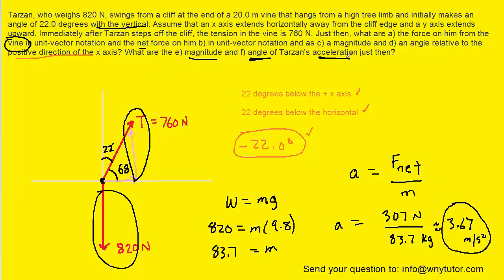And then for the angle of the acceleration, well luckily the angle of acceleration is the same as the angle for the net force. And let's remember from part D that we determined the angle of the net force was 22 degrees below the horizontal. So the angle for the acceleration will also be 22 degrees below the horizontal. So in other words the answer to part F is the same as the answer to part D.